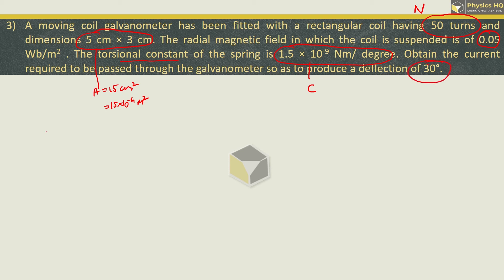The simple formula is I equals C θ by N A B. C value is 1.5 × 10⁻⁹, θ is 30° divided by number of turns which is 50, area is 15 × 10⁻⁴ into magnetic field 0.05.